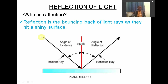The incident ray is the ray coming from the source of light. When it hits onto a plane mirror, it is reflected, and a reflected ray is formed. The word reflected is spelled R-E-F-L-E-C-T-E-D. So when an incident ray comes to hit onto the plane mirror, a reflected ray is formed.